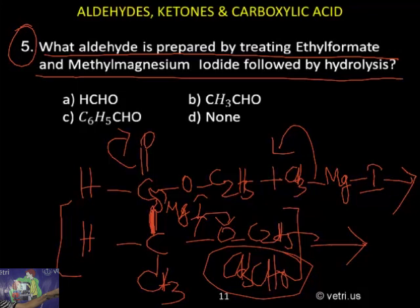Ethyl formate and methyl magnesium iodide product for the compound is acetaldehyde is the product. B is the correct answer. So, let's go.